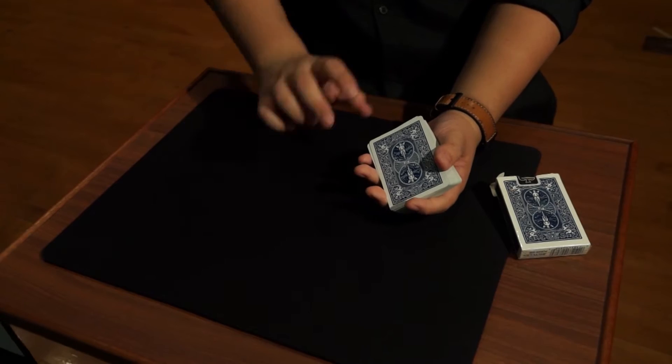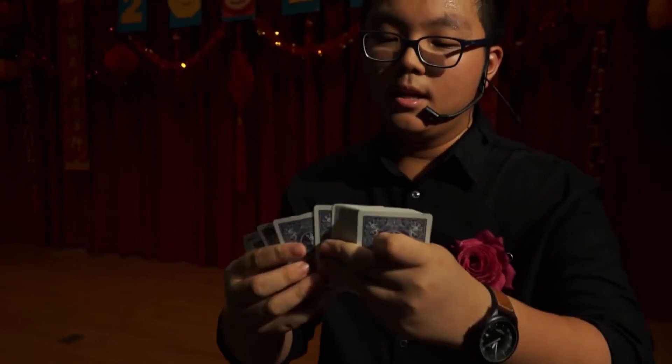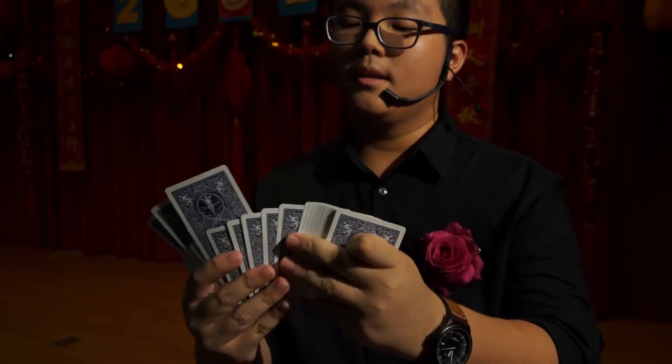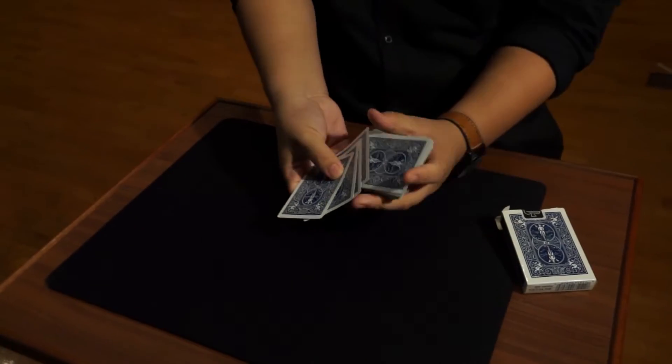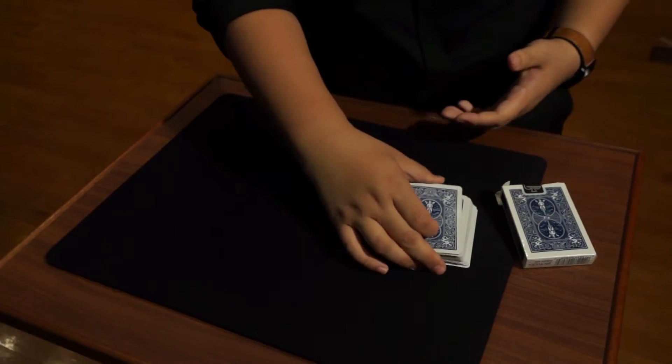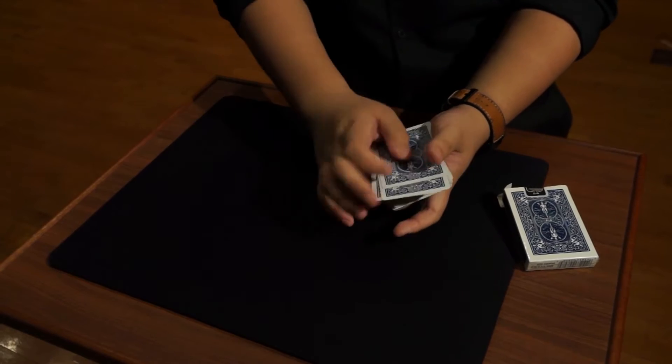Now for this particular trick, I'm going to need 4 playing cards. A lot of people say they are kings, some people say they are queens, some people even say that they are jacks. But these 4 cards are more magical than any of them, even the aces. Because these 4 cards are actually the 4 jokers.